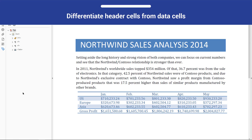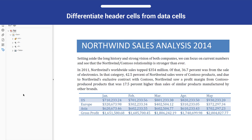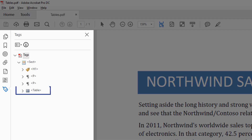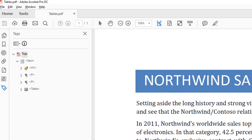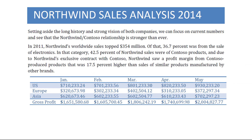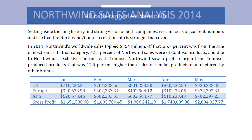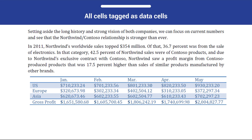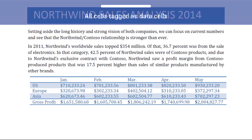The PDF tags need to differentiate the header cells from the data cells. In this example, a table has been tagged using the TouchUp Reading Order tool. Visually, it's possible to tell what the column headers and row headers are. However, someone using a screen reader could not, because all the cells in this table were tagged as data cells in bulk.